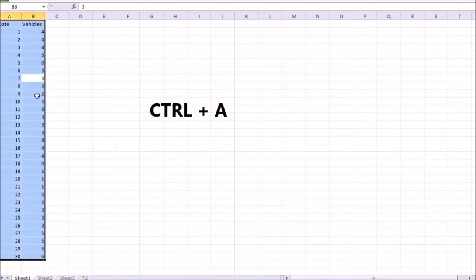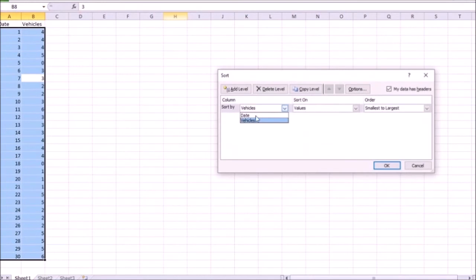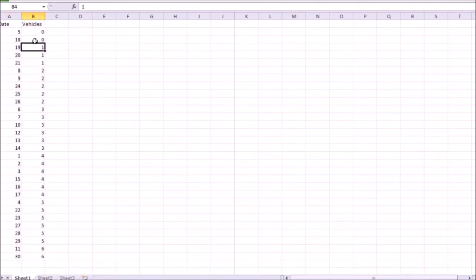So I'm going to click anywhere within this data, hit Control A, go to the data tab, and sort. Select vehicles here, and click OK, which allows me to sort all of this data by the number of vehicles serviced from smallest to the largest number.